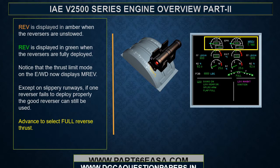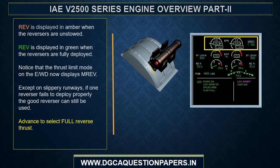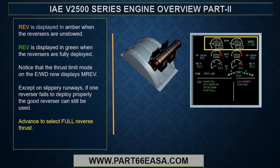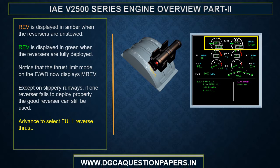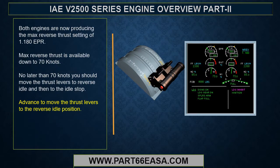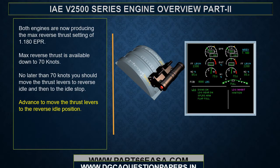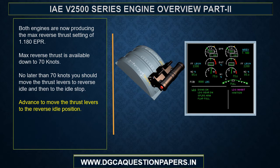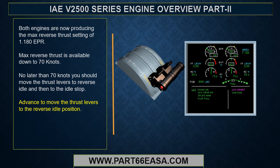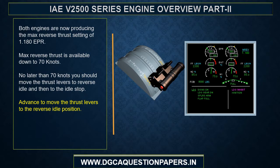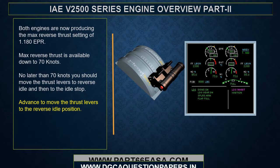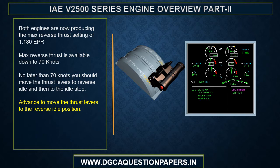Except on slippery runways, if one reverser fails to deploy properly, the good reverser can still be used. Select full reverse thrust. Both engines are now producing the max reverse thrust setting of 1.180 EPR. The max reverse thrust is available down to 70 knots. No later than 70 knots, move the thrust levers to reverse idle, then to the idle stop.